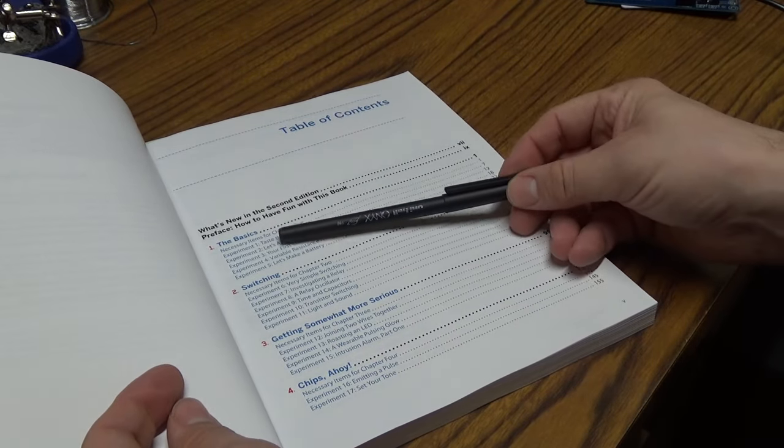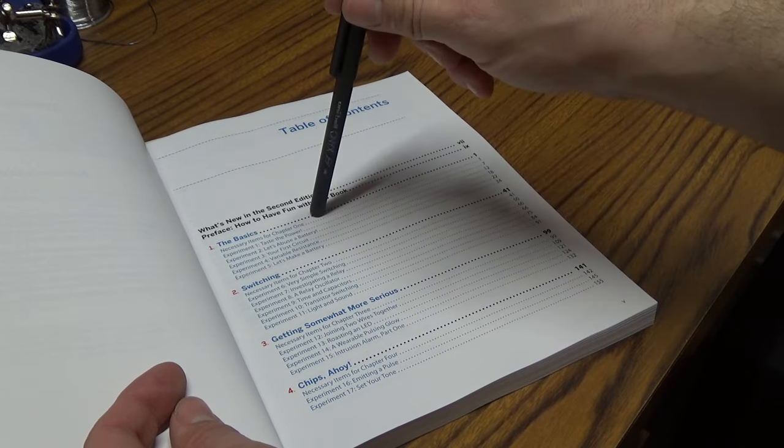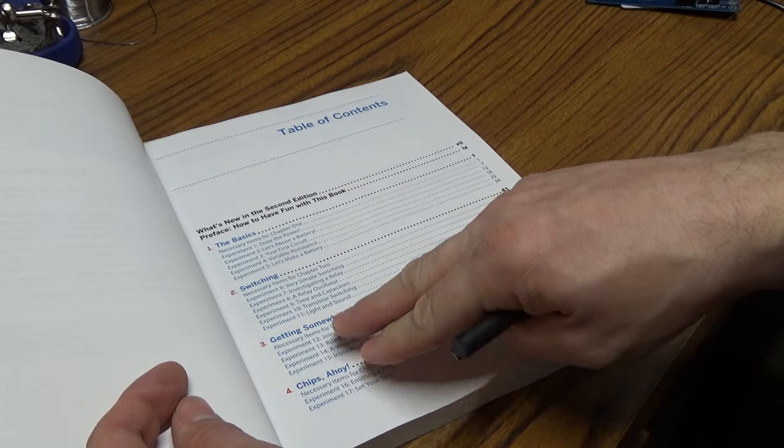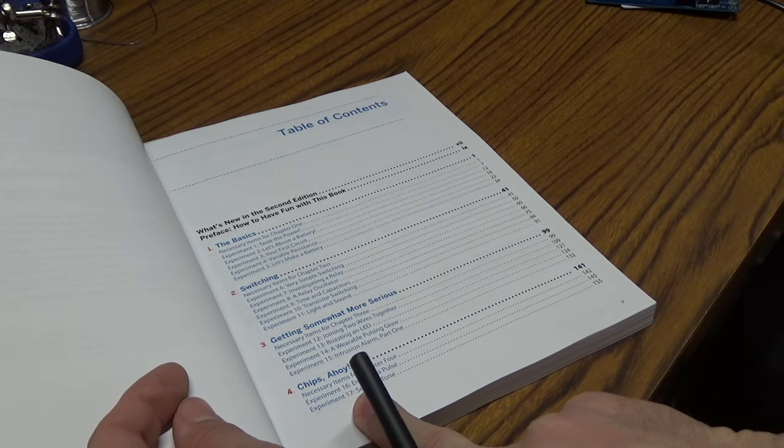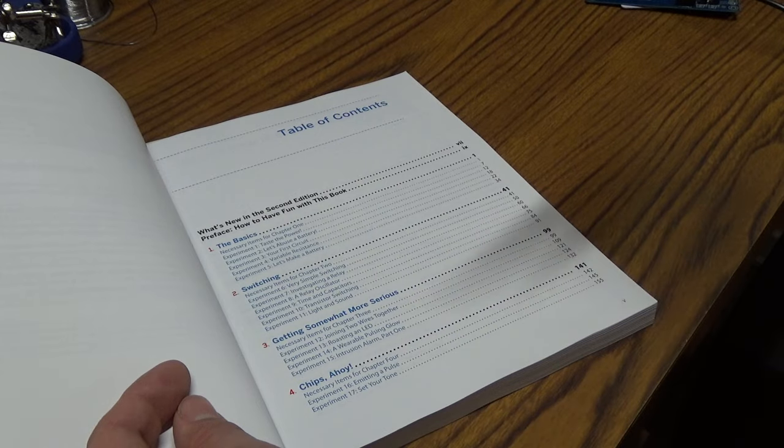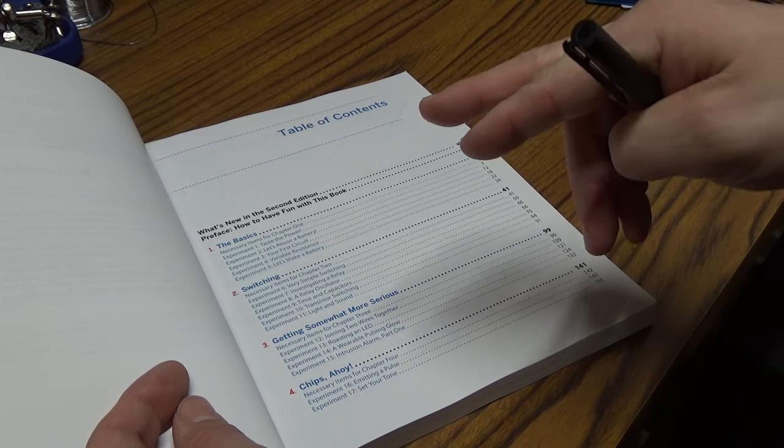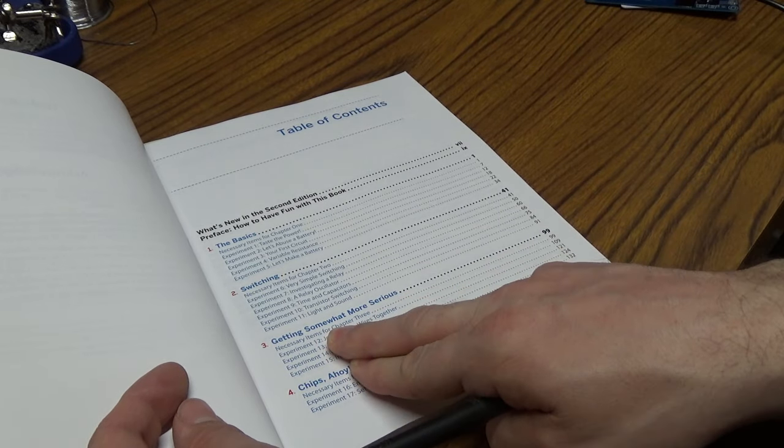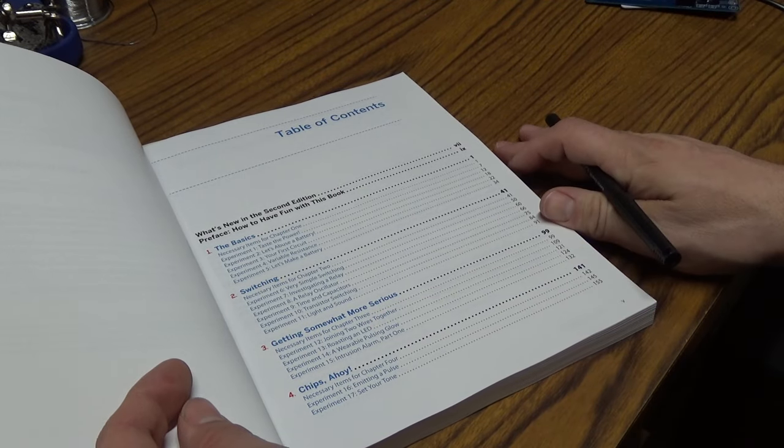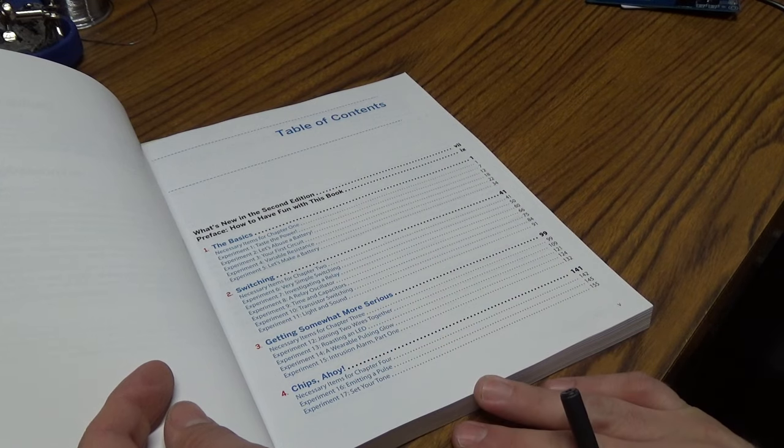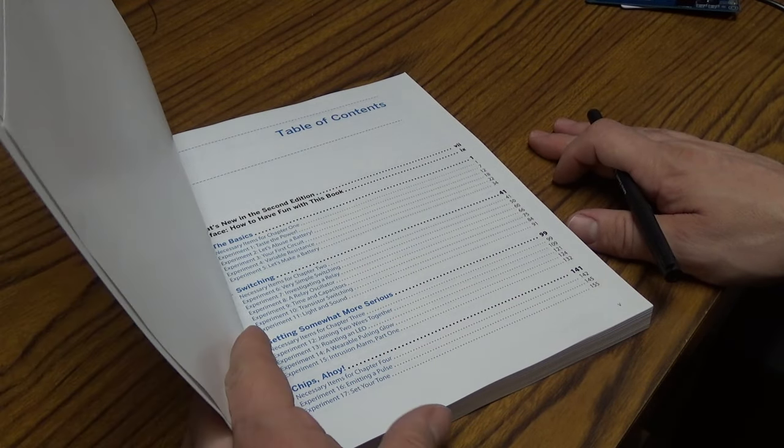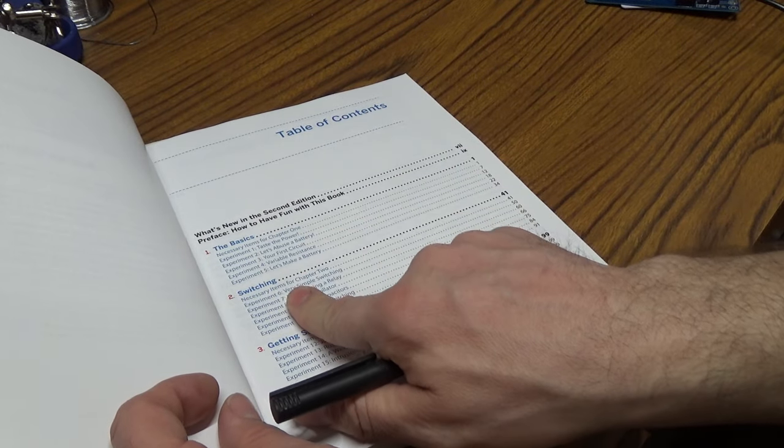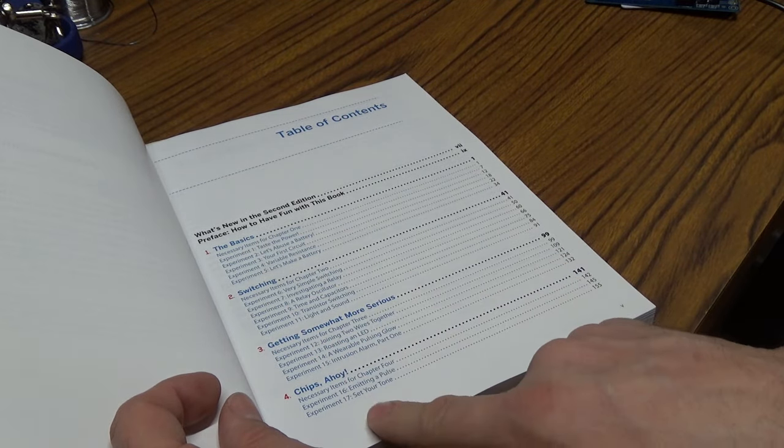So as you can see the book is split up into various sections from basics and then they start getting into specifics such as working with integrated circuits, learning about some of the more advanced concepts. And then each section is a number of experiments.